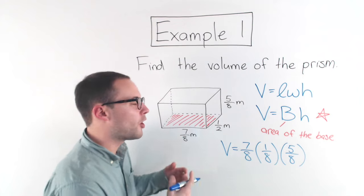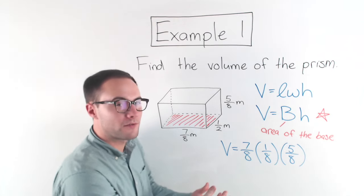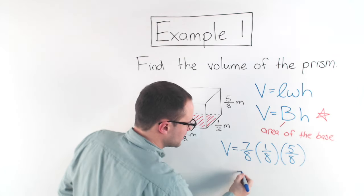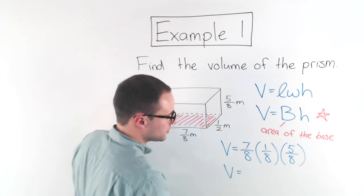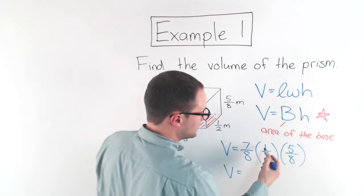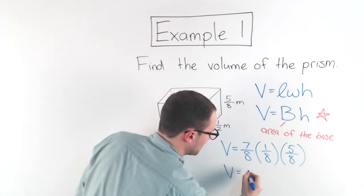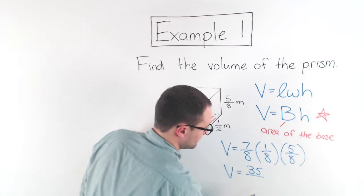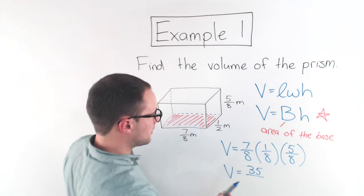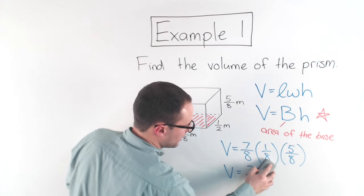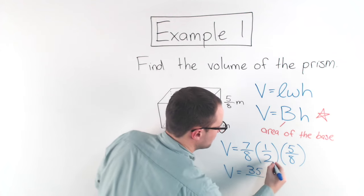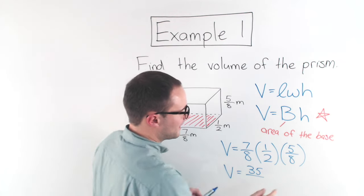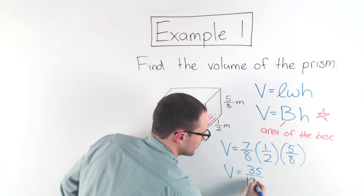Anytime I'm multiplying fractions, I'm always hoping and trying to simplify first. Unfortunately here, there's nothing that I can simplify. So I'm just multiplying straight across. 7 times 1 is 7, times 5 is 35. I'm sorry, that's supposed to be 1/2. My fault. 1/2. Okay. I'm going to do 8 times 8, that's 64 times 2 is 128.